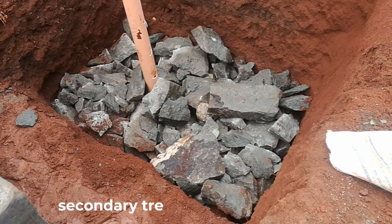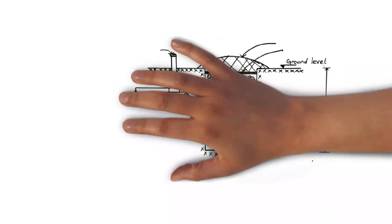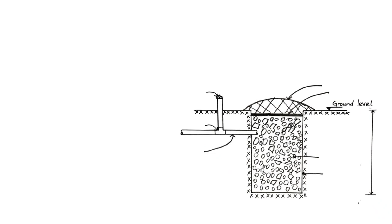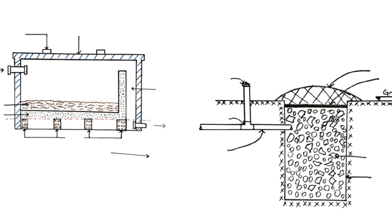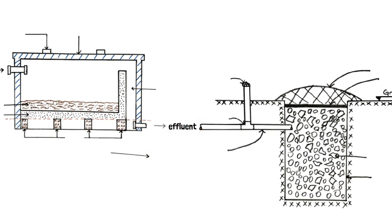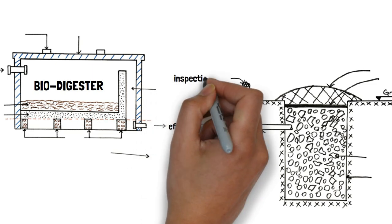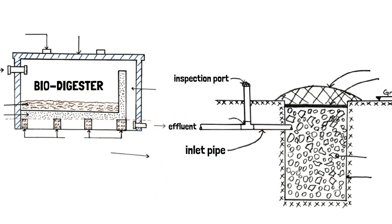This is called secondary treatment of wastewater. Using this schematic I drew up for you, let me show you how it generally works. The liquid effluent, which is relatively cleaner than the initial black water, flows out of the biodigester and enters the soak pit through this inlet pipe here.